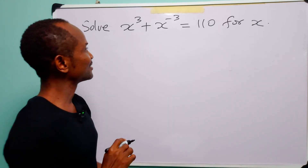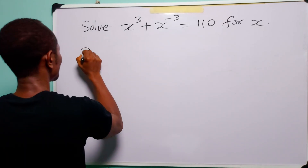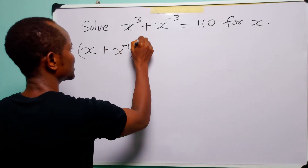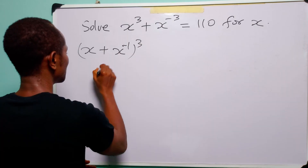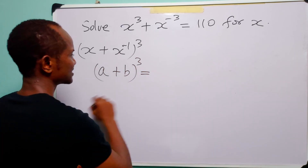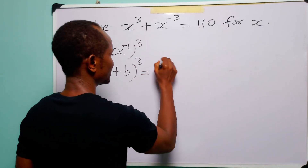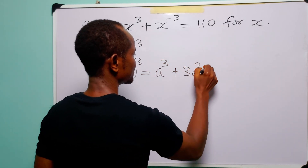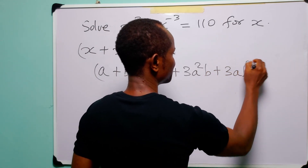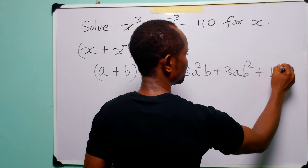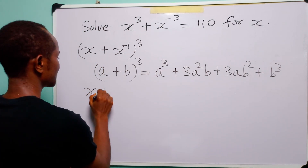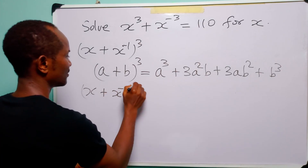Hello and welcome. Let us begin with the expansion of (x + x⁻¹)³. Recall that when we have (a + b)³, we can expand this as a³ + 3a²b + 3ab² + b³. Hence, to expand (x + x⁻¹)³ we apply this formula.